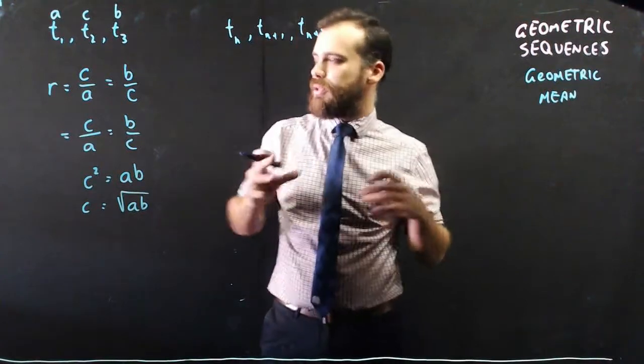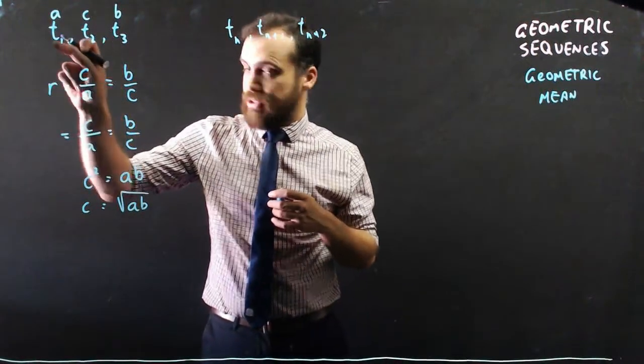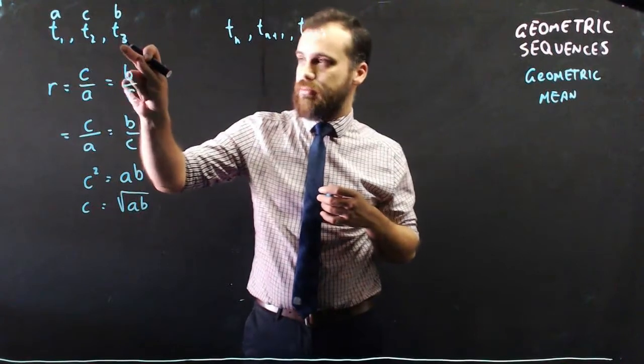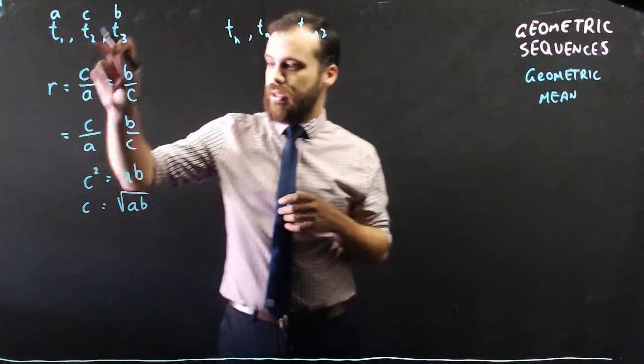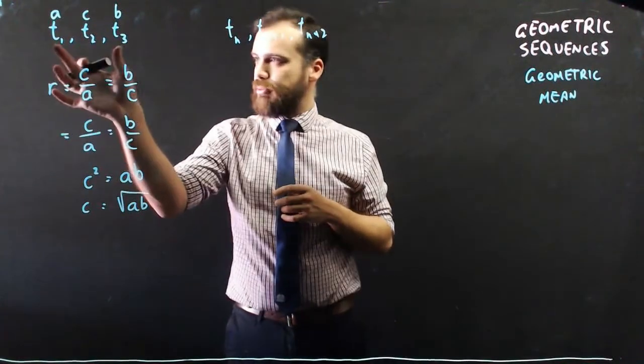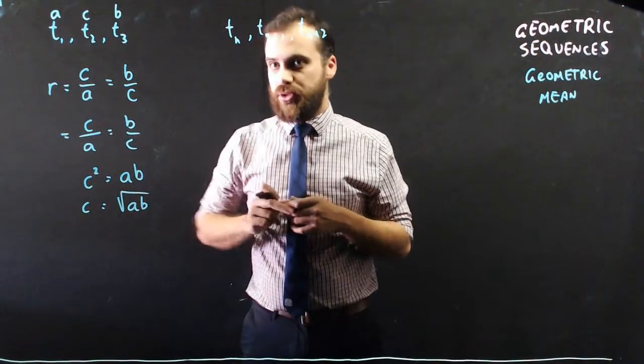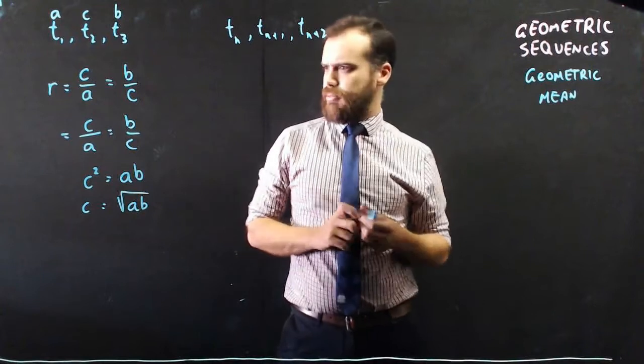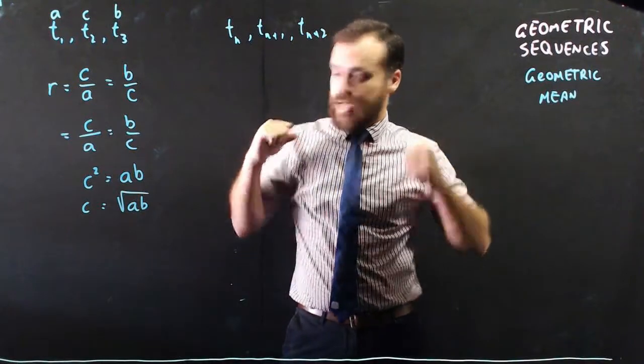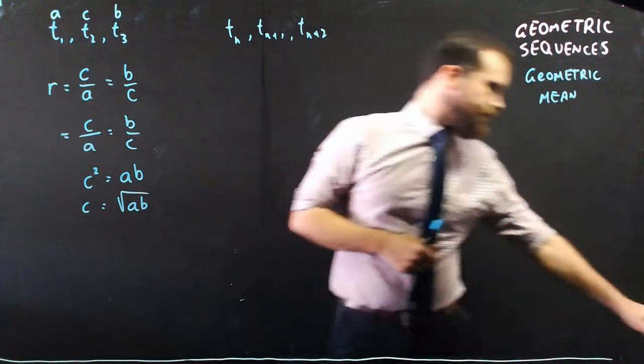What does this mean? Well, it means that if you know a term, and you know another term, but you don't know the term in the middle, you can find it by multiplying these terms together, and then taking the square root of that. That's geometric mean.